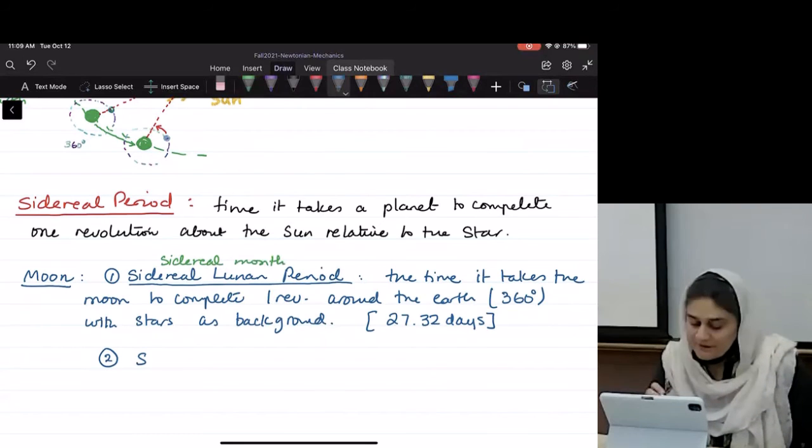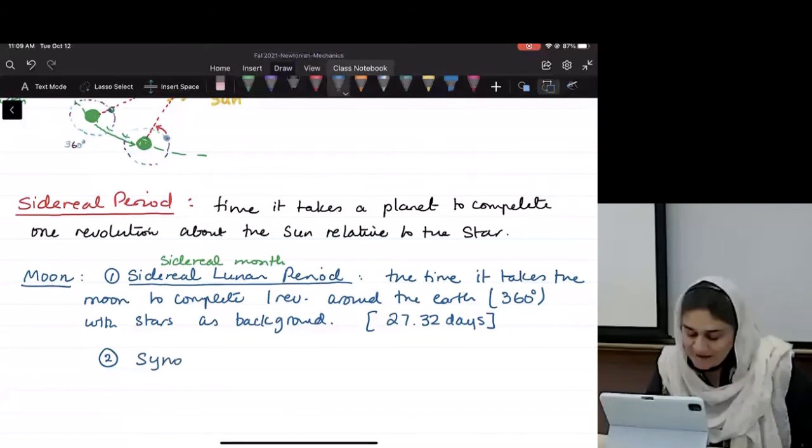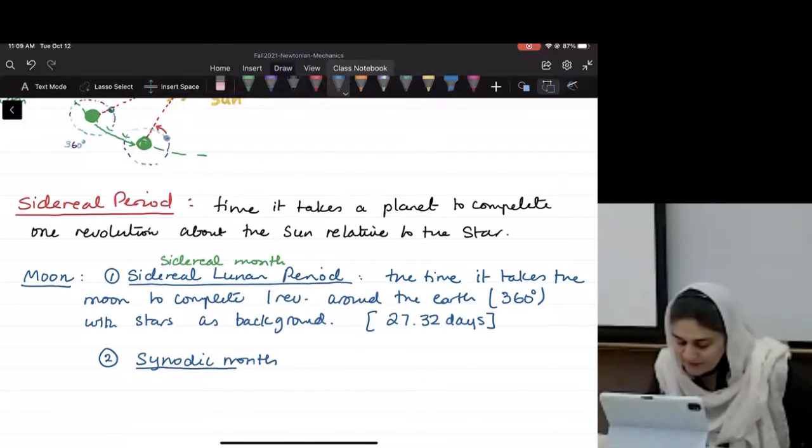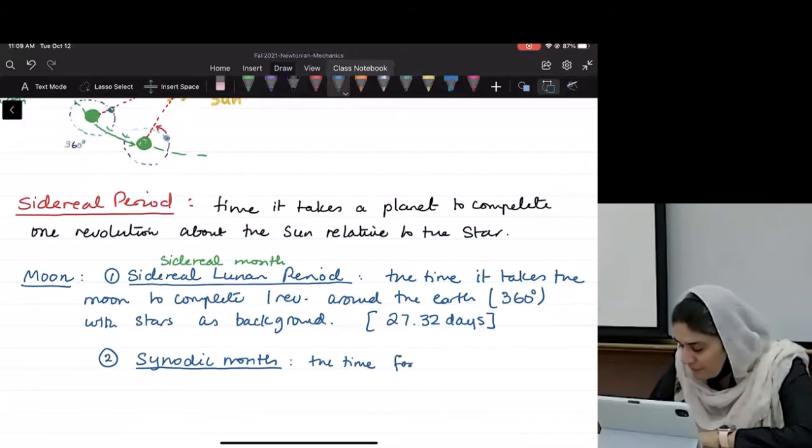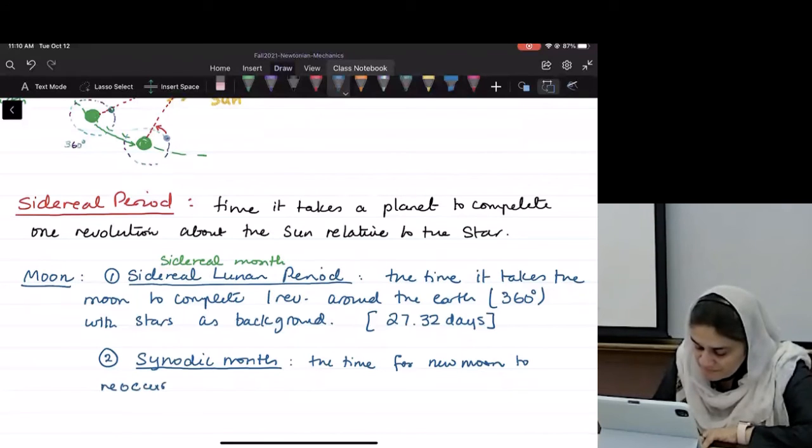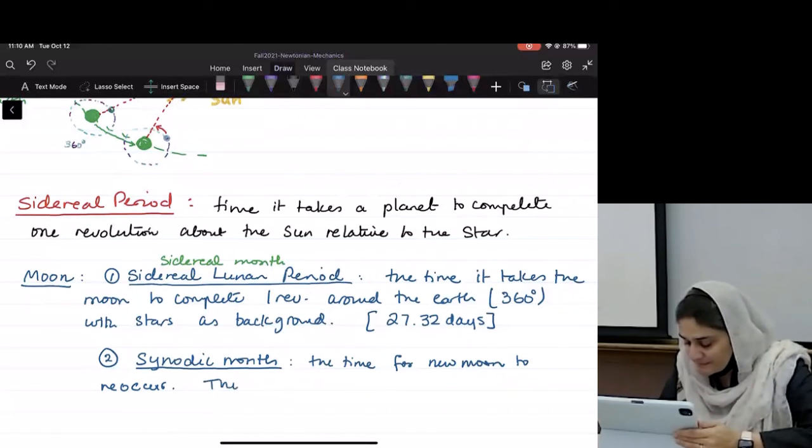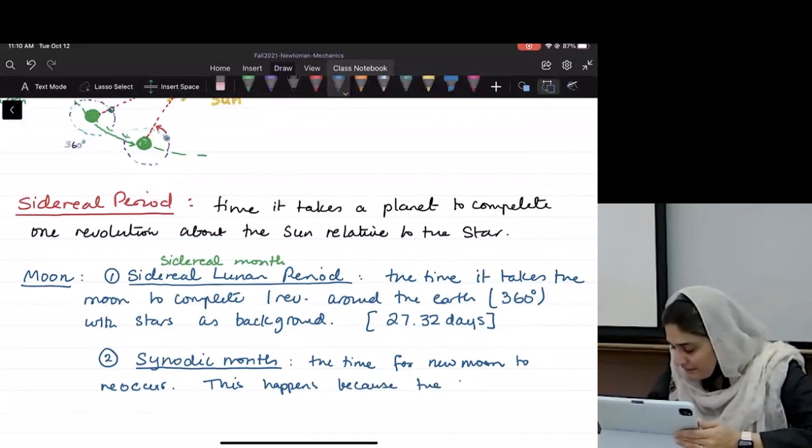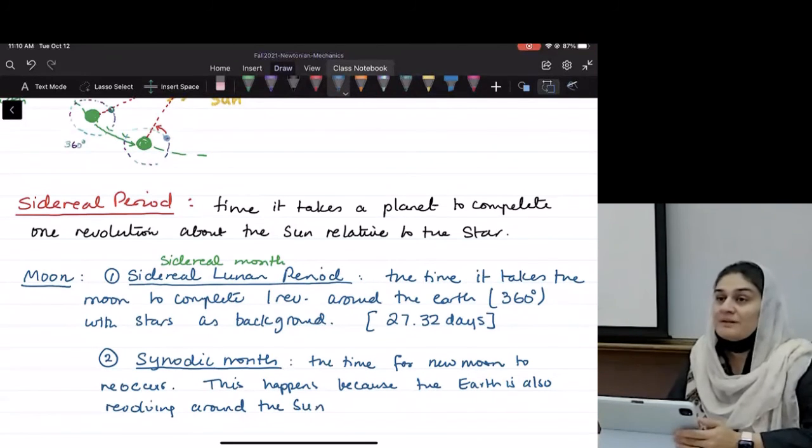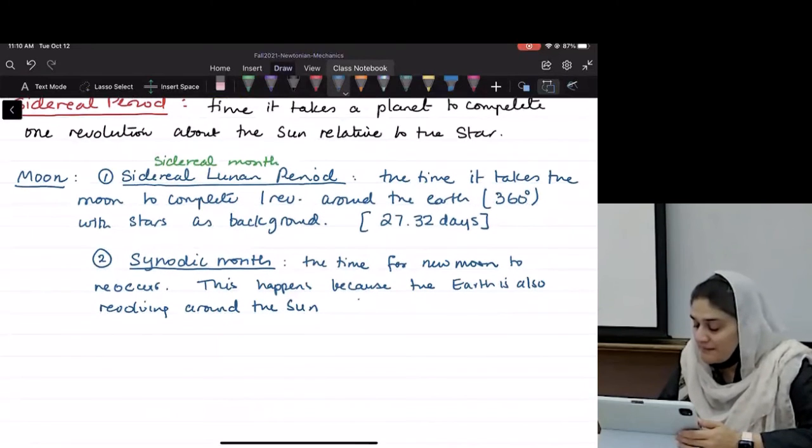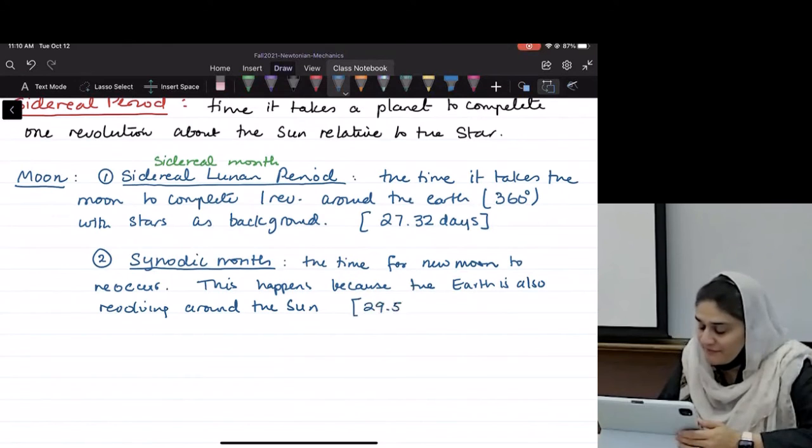Number two, the synodic month or the synodic lunar period is the time for new moon to reoccur. This happens because the earth is also revolving around the sun. So there is a lag and the synodic month is 29.53 days.